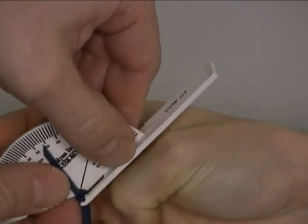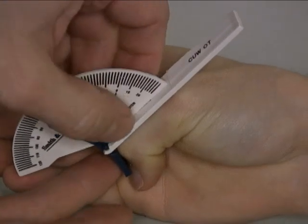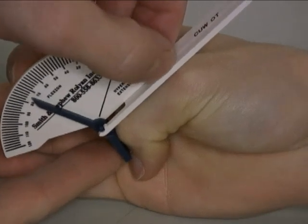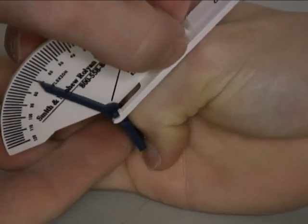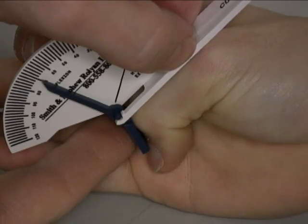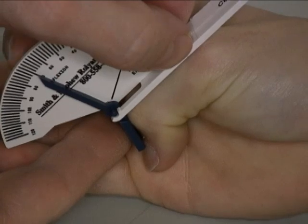The ASHT method, however, uses a goniometer with a shorter moving arm that ends at the base of the thumb nail. So that does not extend all the way to the end of the nail. And that gives us a different measurement, almost 70 degrees of thumb intraphalangeal joint flexion.